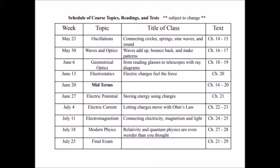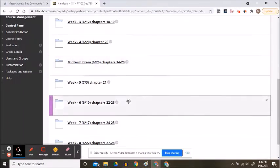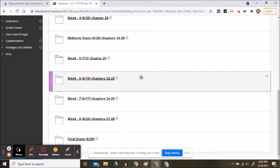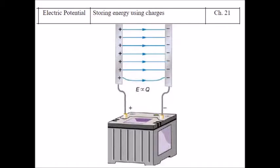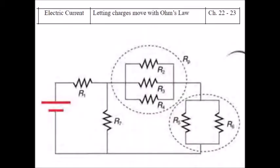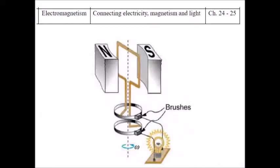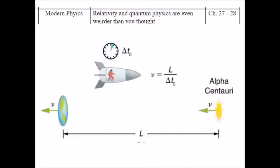As you can see, we're moving fast — more than a chapter per week. The second half of the course covers electric potential, electric circuits, electromagnetism, modern physics, and a final exam — all before the end of July.